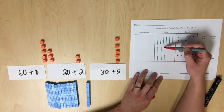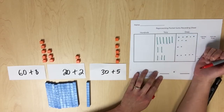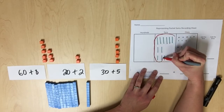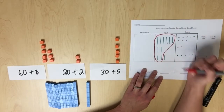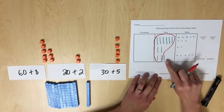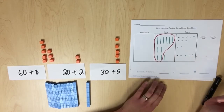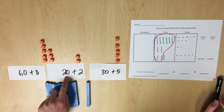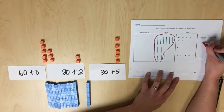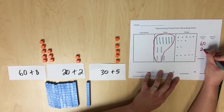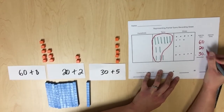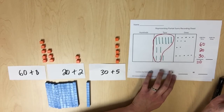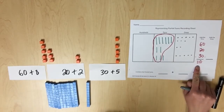We can use 10 tens to compose 100 and we have 110 left, so this has a value of 110. We're going to write our equation: 60 plus 20 plus 30 equals 110. The partial sum of the tens is 110.